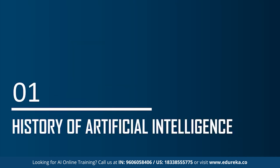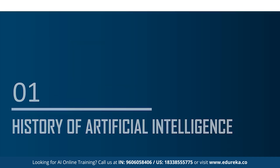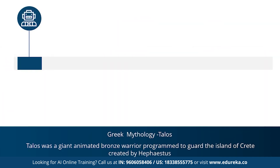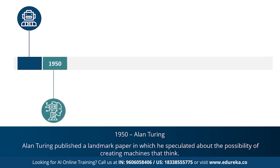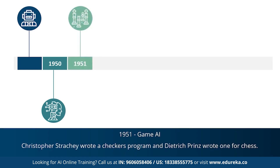Let's get started with the history of artificial intelligence. The concept of AI goes back to the classical ages. Under Greek mythology, the concept of machines and mechanical men were well thought of. An example is Talos, a giant animated bronze warrior programmed to guard the island of Crete. In 1950, Alan Turing proposed the Turing test, which determines whether a computer can intelligently think like a human being — the first serious proposal in the philosophy of AI. 1951 marked the era for game AI, when computer scientists developed programs for checkers and chess.